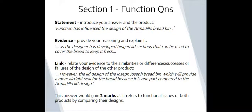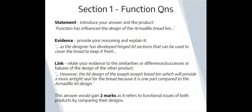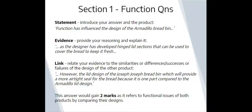Using the statement, evidence, link structure again: firstly introduce your answer and the product — 'Function has influenced the design of the Armadillo bread bin.' Your evidence, providing your reasoning: 'because the designer has developed hinged lid sections that can be used to cover the bread to keep it fresh.' Then link it and relate your evidence to the similarities, differences, or successes and failures of the other product — 'However, the lid design of the Joseph Joseph bread bin will provide a more airtight seal for the bread because it is one part, compared to the Armadillo lid design.'